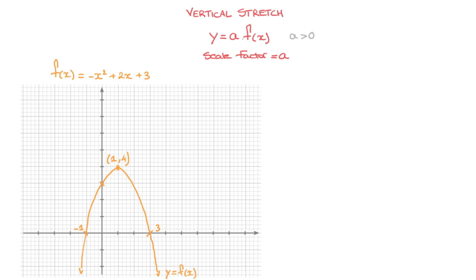Let's see how that works with a couple of examples. For example one, consider the transformation y equals two times f of x. We can see that we're dealing with a vertical stretch in which the scale factor a is two. To obtain this new curve, all we have to do is multiply the y-coordinate of every single point along this curve by two. Of course, doing that for every single point isn't possible — instead, we focus on any key point whose coordinates are known.